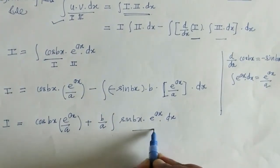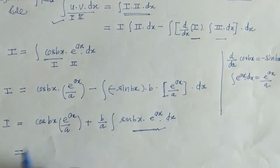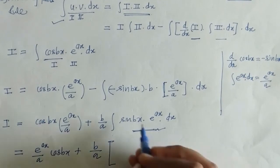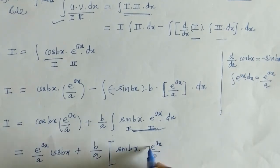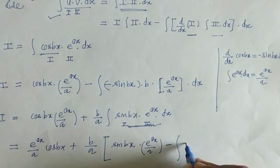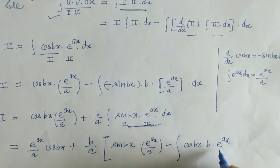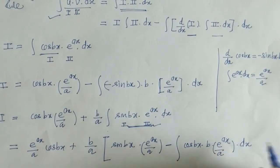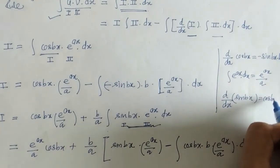Now again we can see that here we have a product of two functions — sin(bx) and e^(ax) — so this integral again requires integration by parts. sin(bx) is the first function and e^(ax) is the second. Applying the rule: first function sin(bx) into integral of second, minus integration of derivative of first function. The derivative of sin(bx) is cos(bx) times b, into the integral of e^(ax)/a.